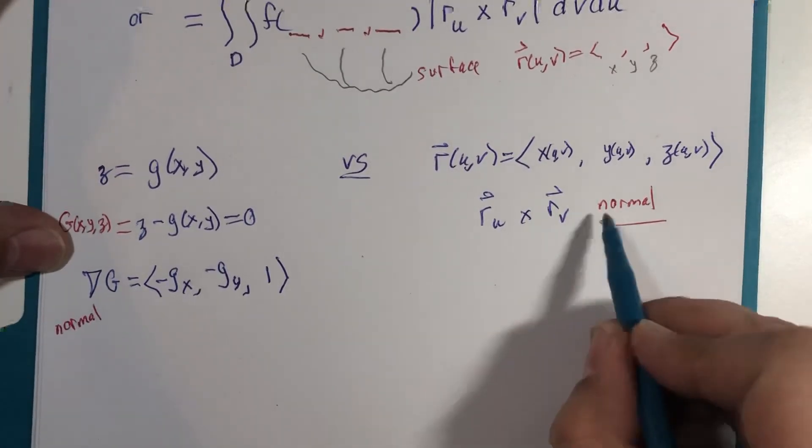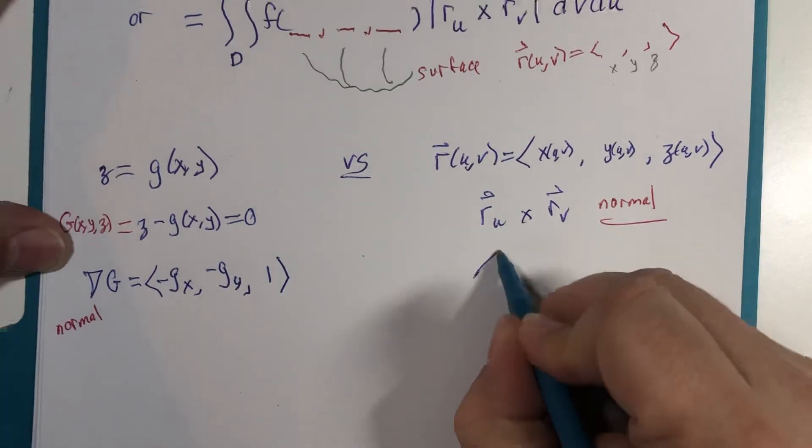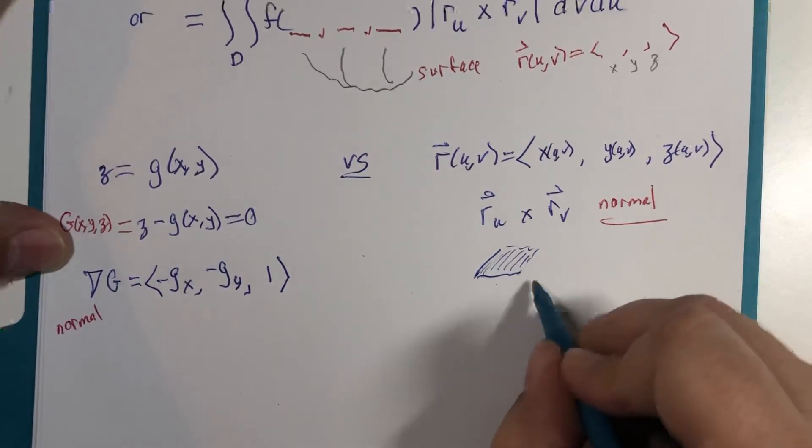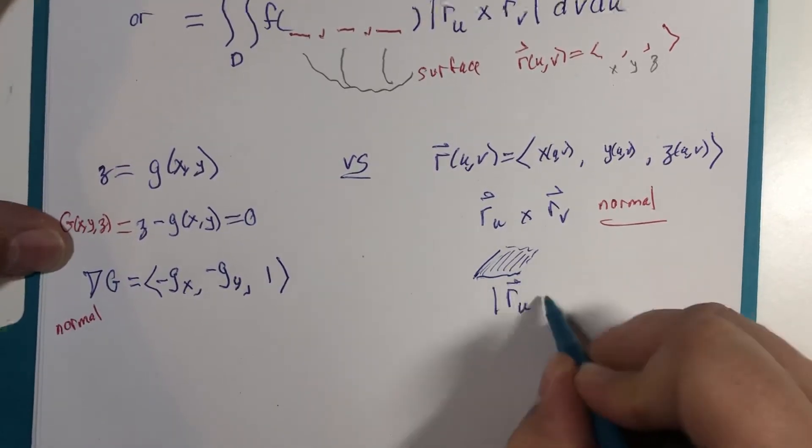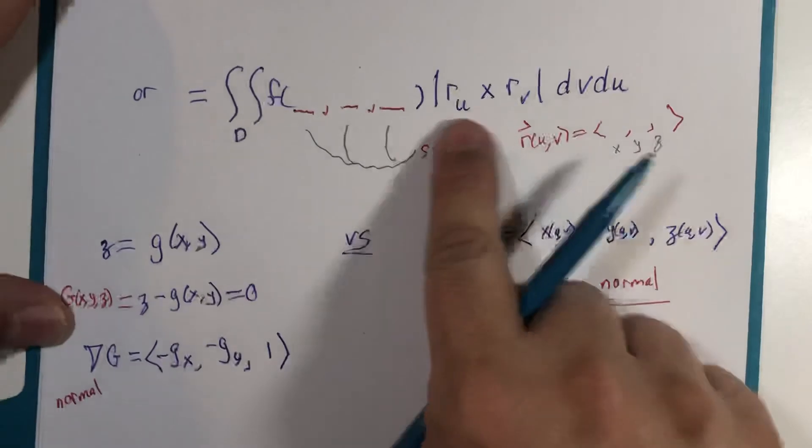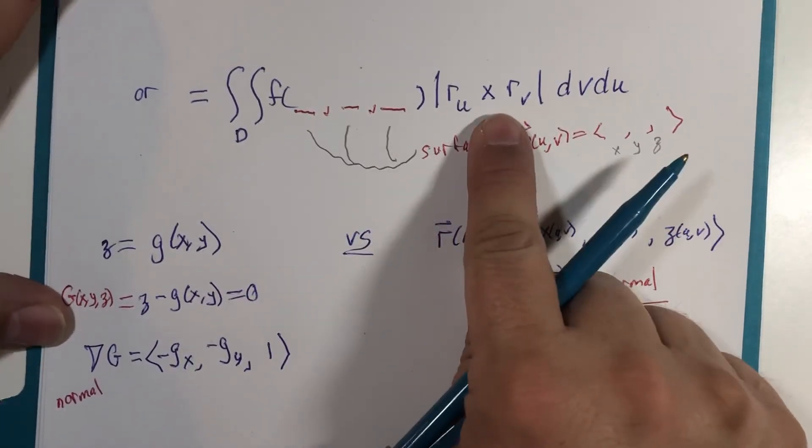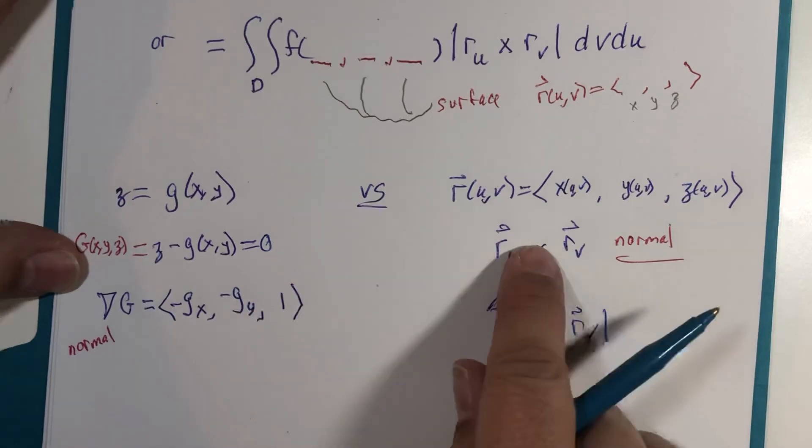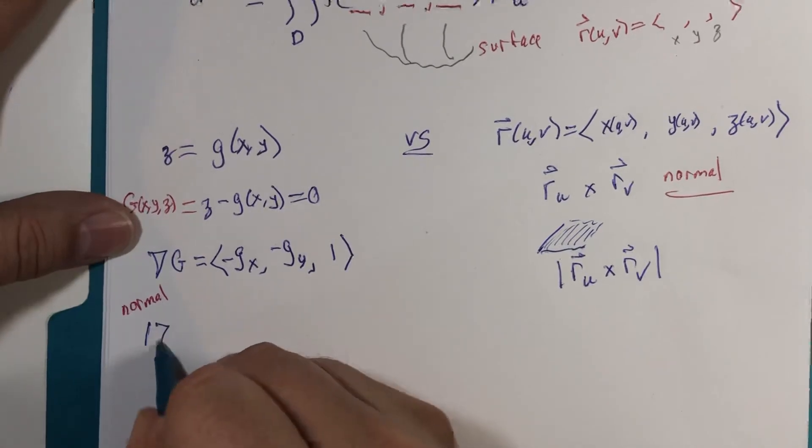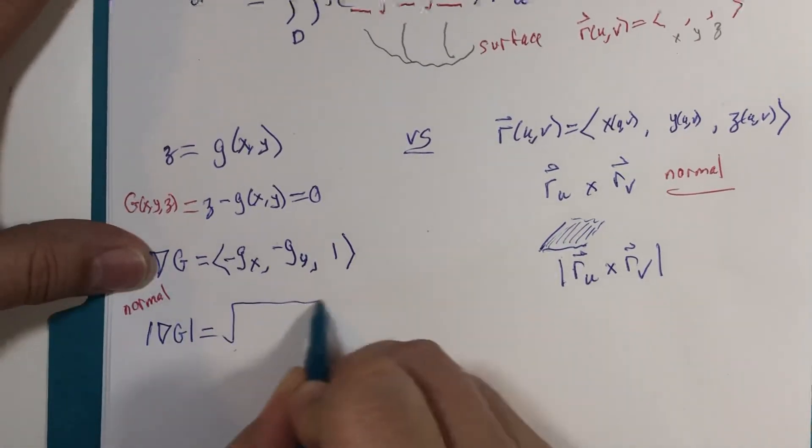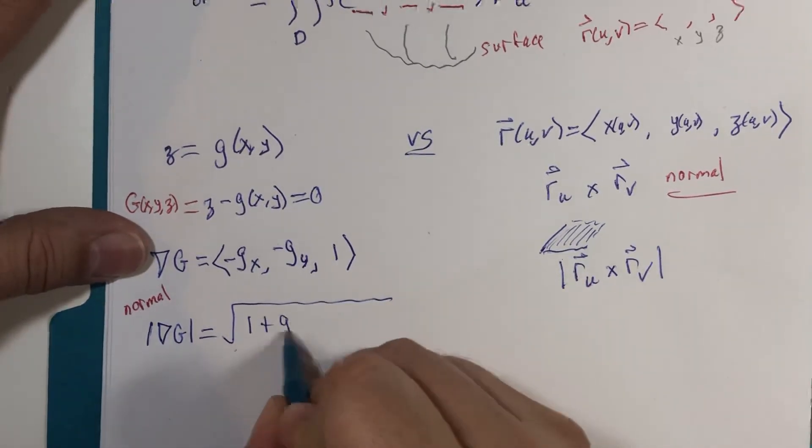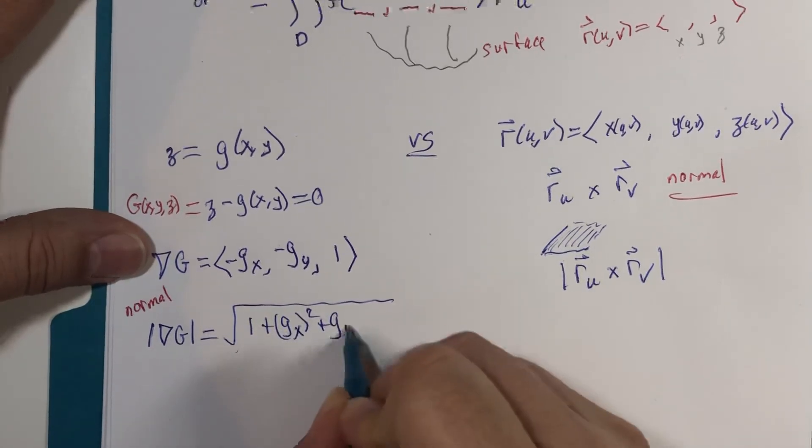Now, the magnitude of the cross product also found the area of a parallelogram. That magnitude R U cross product R sub V or partial with respect to V. So that was an area of a parallelogram. Well, if both of these calculations are the same normal vectors, then the magnitude of this would be the same area as this. And that's going to be 1 plus G with respect to x squared plus G with respect to y squared.